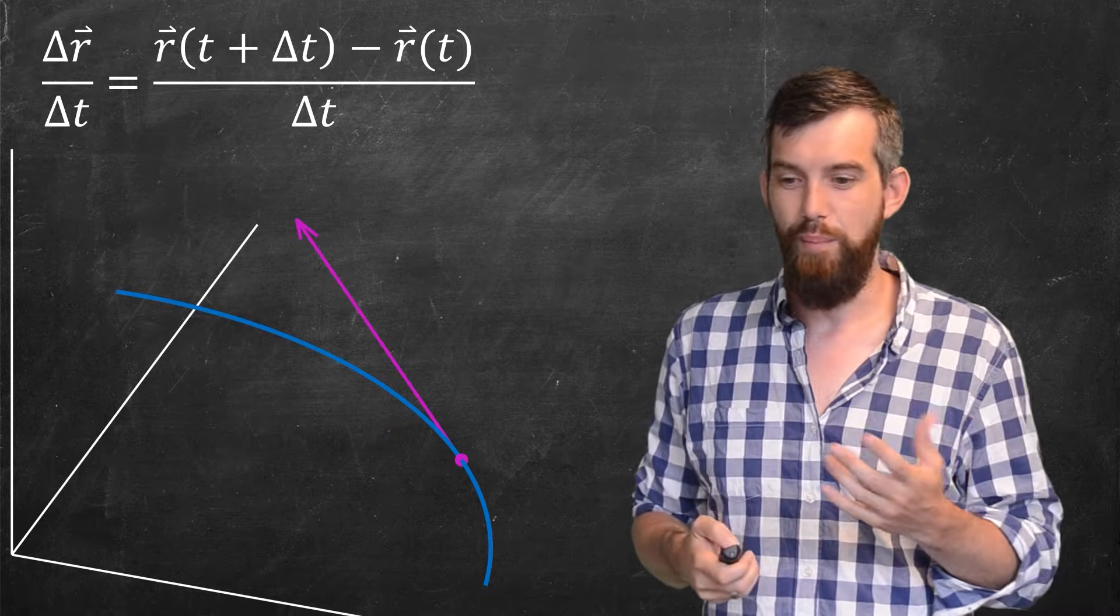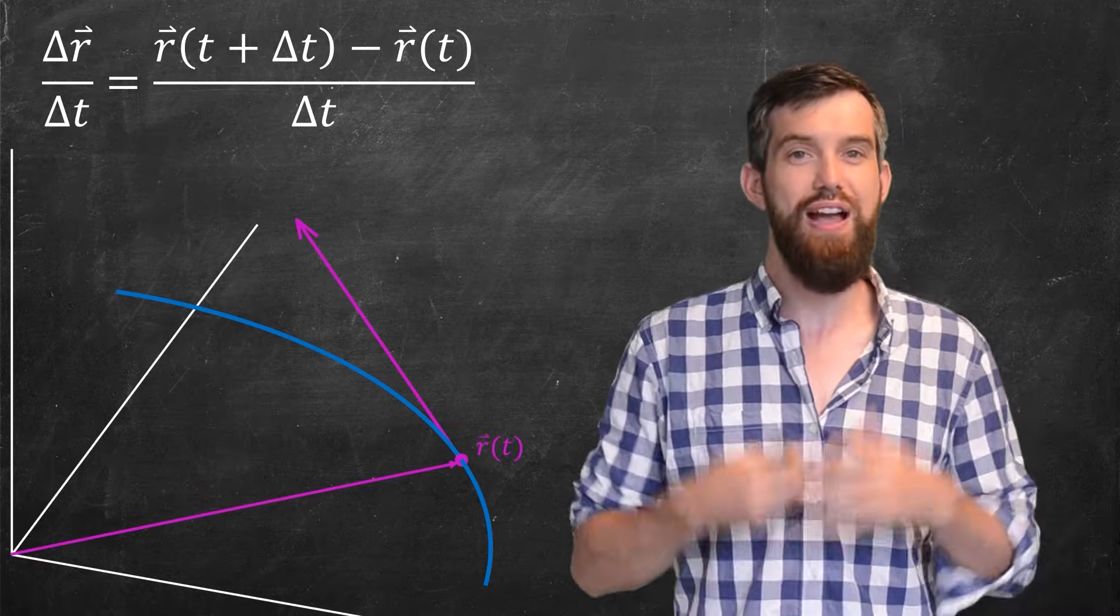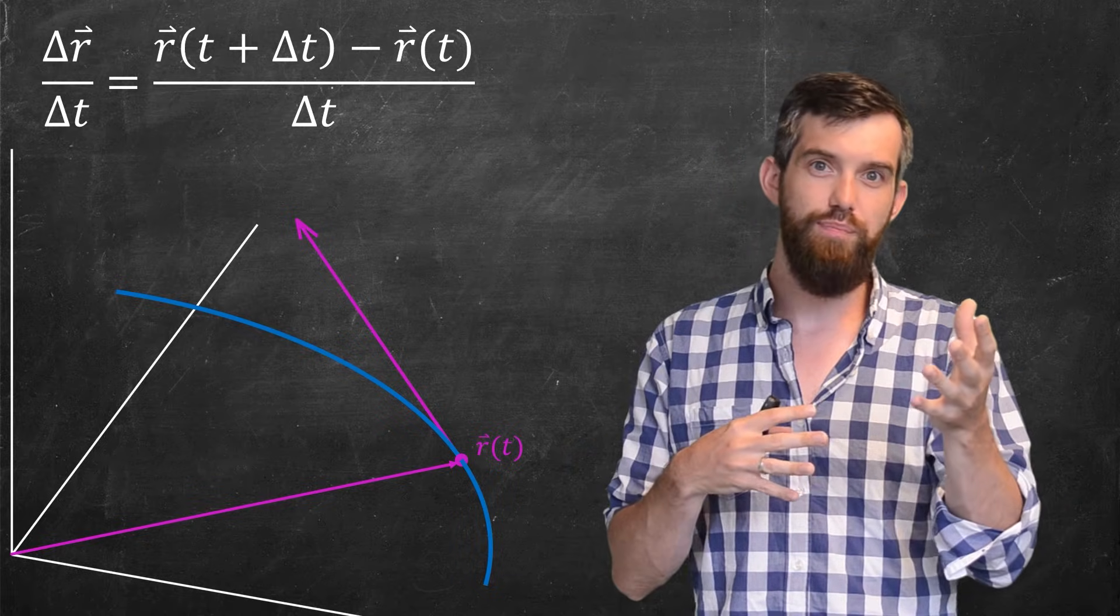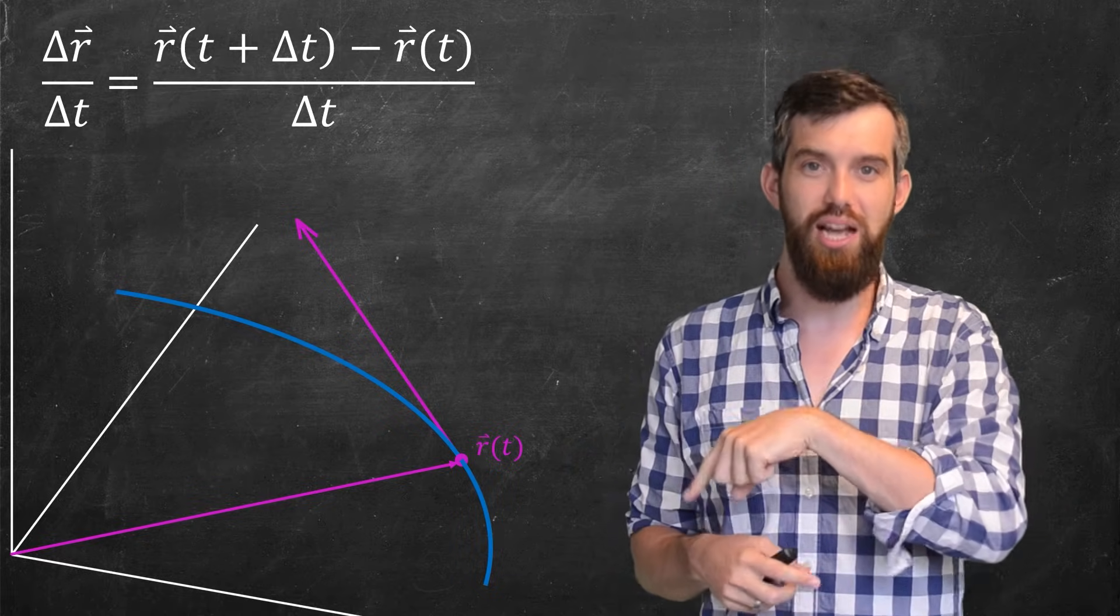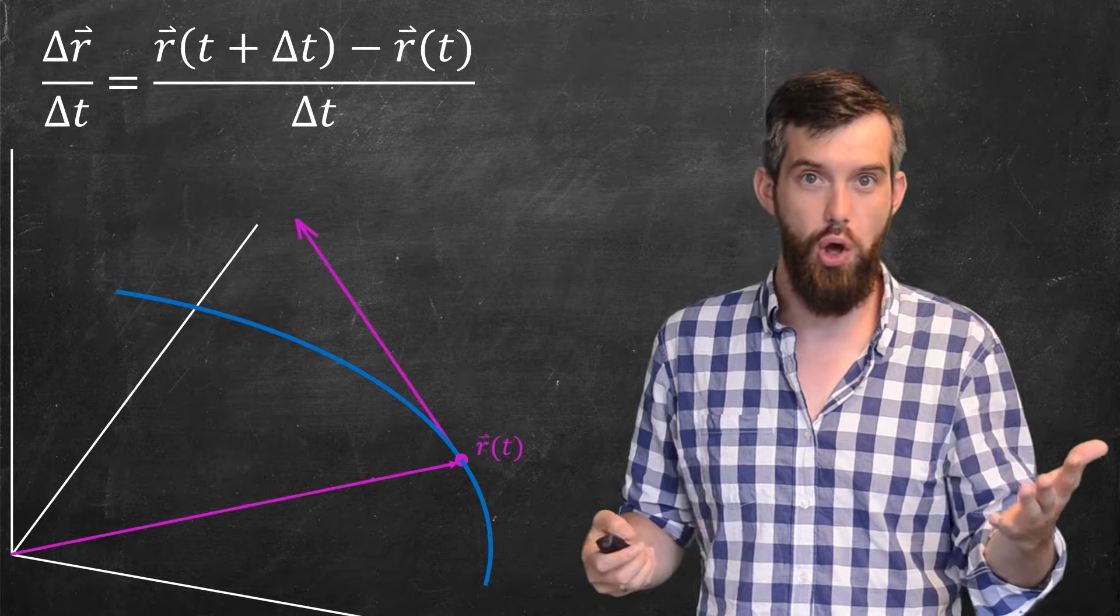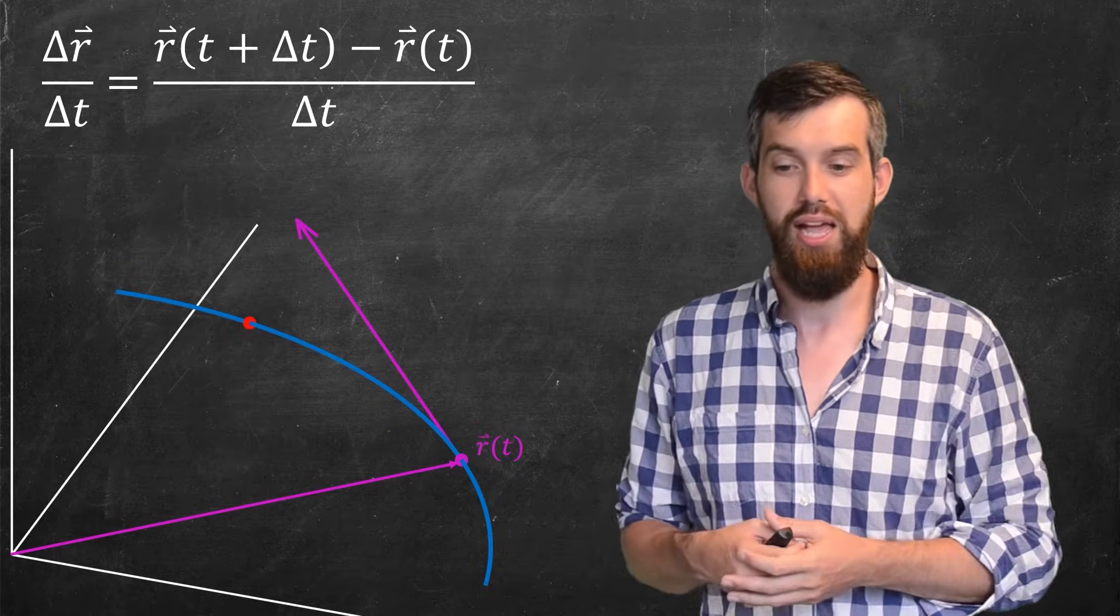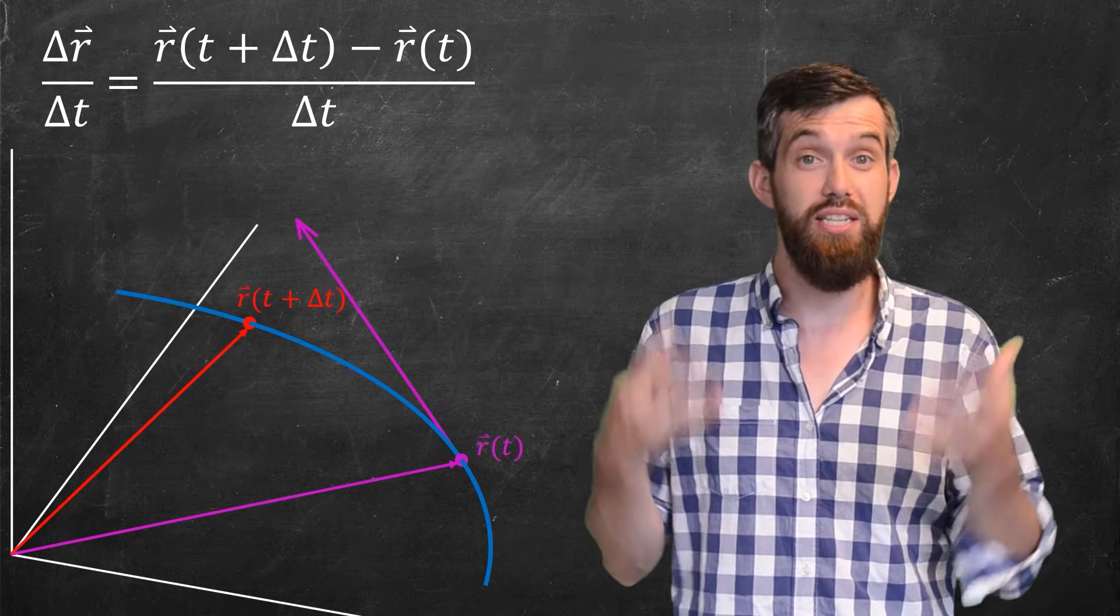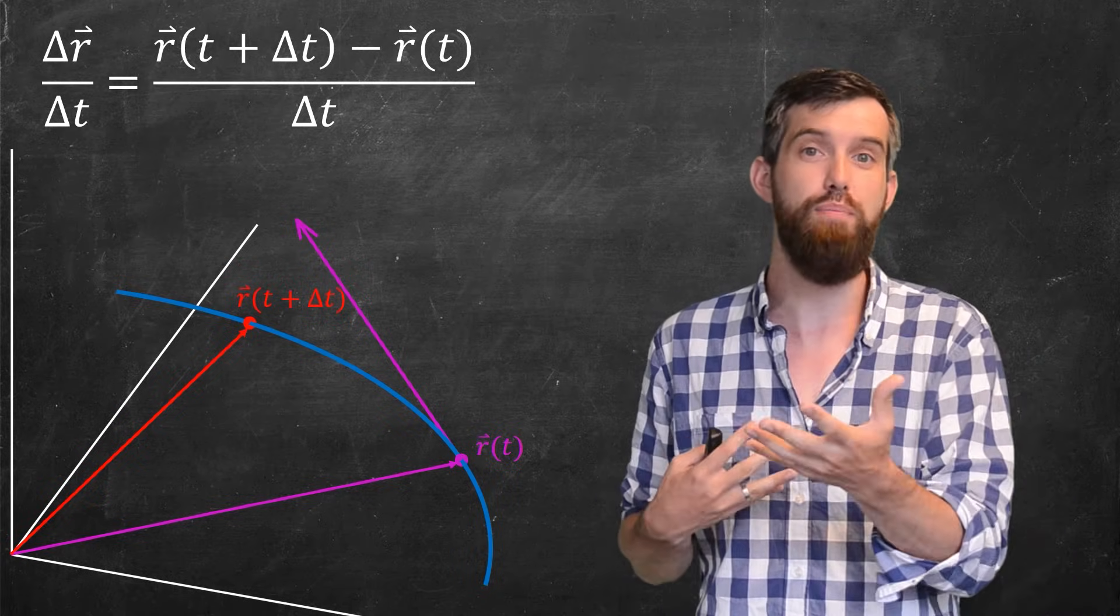So if I have my one point, my r vector is just going to be the vector that goes from the origin out to my point. That's what I mean by r. Then r of t plus delta t is just some other point along the curve. It's what happens when I plug in t plus delta t, and I'm going to have some other vector r of t plus delta t going from the origin to that point as well.